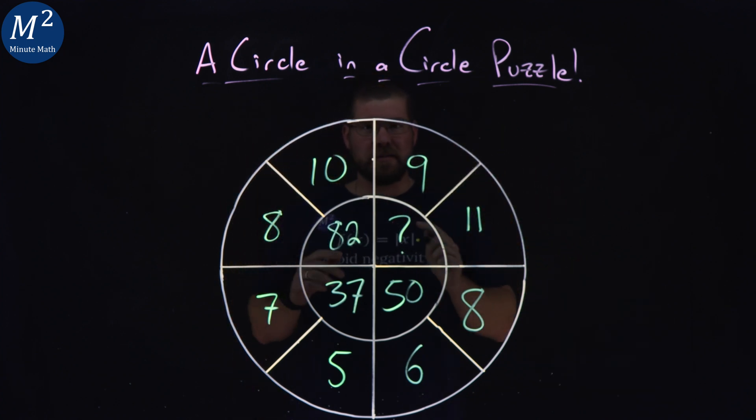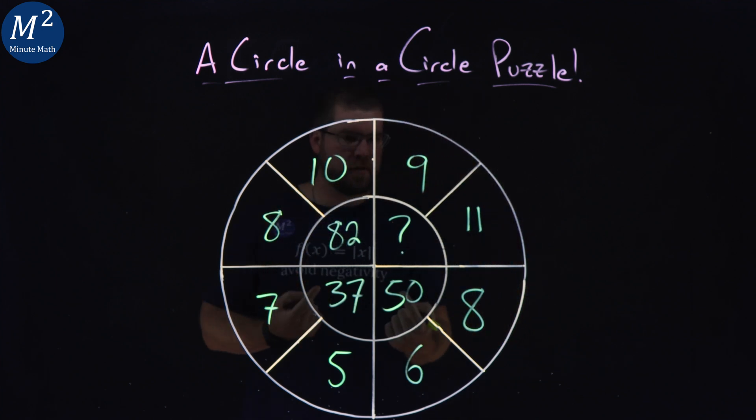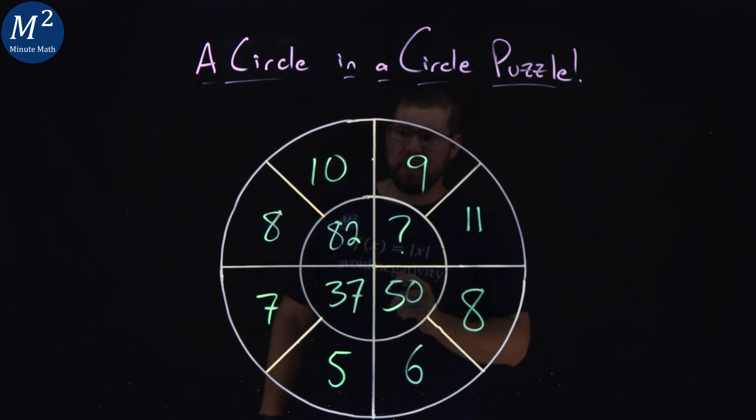The puzzle is this. We have an outer circle and an inner circle. Outer circle has a little more numbers, twice as many to be exact.